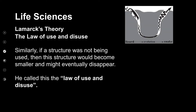Similarly, he said that if a structure was not being used, it would become smaller and might even disappear. We can see this with snakes: he believed snakes were lizard-like, with four limbs. As they burrowed in the soil or lived under rocks, the narrow space didn't allow them to use those limbs. The less they used the limbs, the smaller they became, until eventually they completely disappeared — and this is how we know snakes today, without any limbs.